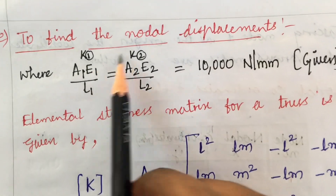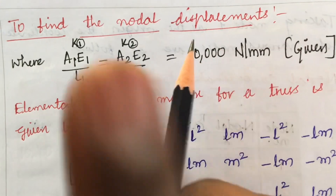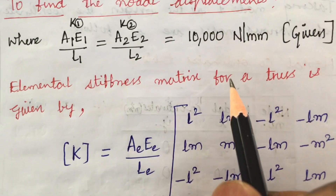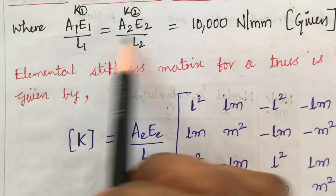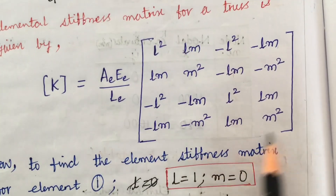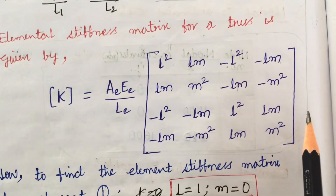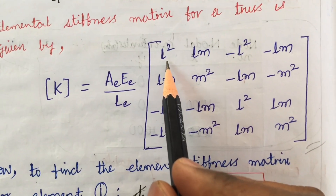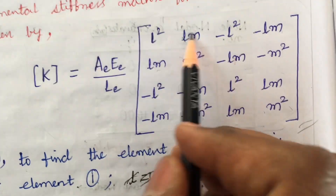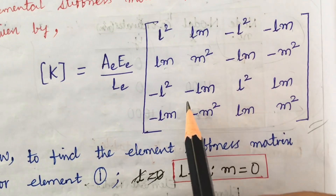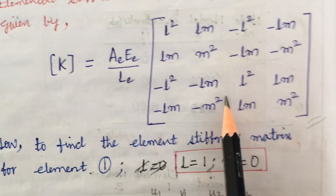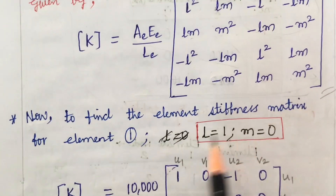The next point is to find the nodal displacement. Please watch part A of this numerical problem, as the problem is too lengthy and I am posting it in parts. The elemental stiffness matrix for a truss is given by the formula: l squared, lm, lm, m squared — with positive values on the diagonal and negative values off-diagonal. I have uploaded a clear video on the stiffness matrix for a truss element; please do watch that.